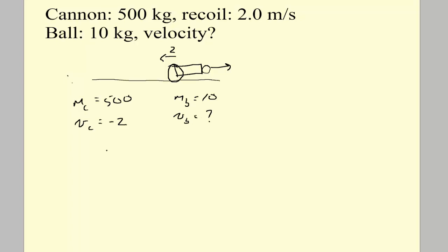However, we do know that momentum is conserved. So we know that before the ball is fired, there is no momentum. So the total momentum initially is 0. That's because everything is stationary. And therefore, that momentum is made up of the mass of the cannon times 0 plus the mass of the ball times 0.